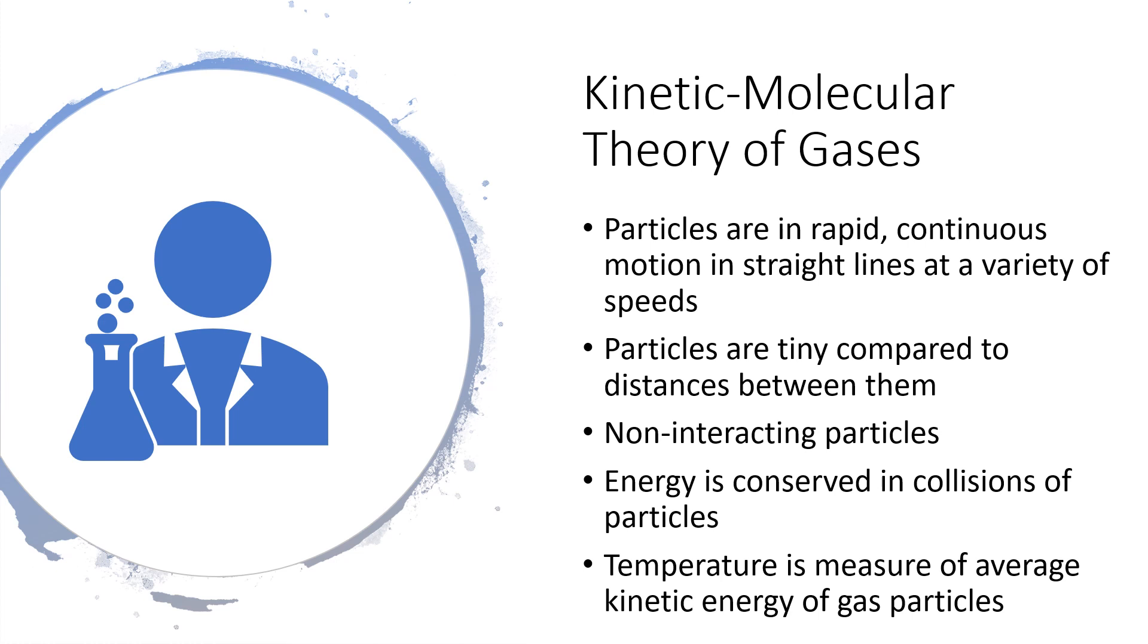And the last postulate says that temperature is a measure of the average kinetic energy of gas particles. Basically, the important implication of this one is that as the temperature increases, the particles move more rapidly because kinetic energy is that energy of motion. In a physics class, you would say that kinetic energy is one-half mv squared, where m is the mass of the particles and v is the speed. So if the kinetic energy goes up and it's the same gas particles, so the mass isn't changing, then the speed has to increase to keep that equality.